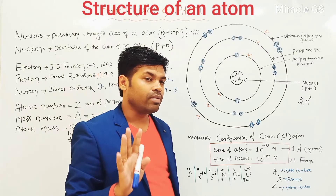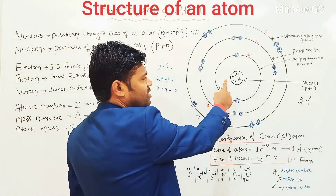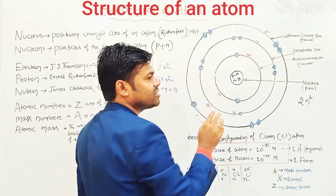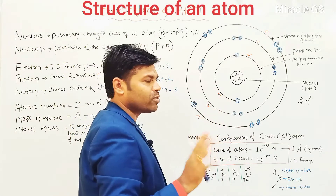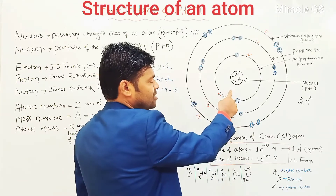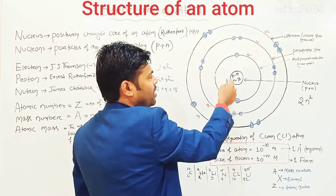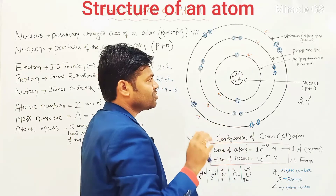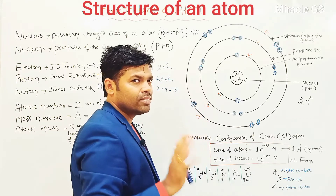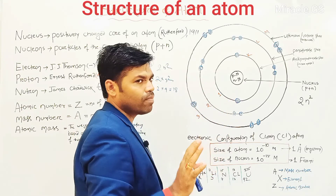So that is why the atom is electrically neutral, whereas the nucleus — the naabhik — is electrically positive. This is a very, very important question. Proton is positive charge, neutron is neutral — that means nucleus charge is positive. Whereas electrons which revolve around the nucleus are negative in charge. So positive and negative cancel out, that is why atom is electrically neutral, whereas nucleus is electrically positive.